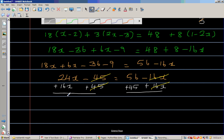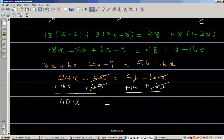So what remains is 24x plus 16x, which is 40x, is equal to 56 plus 45, which is 101. So this implies you're dividing both sides by 40. So x is 101 out of 40.